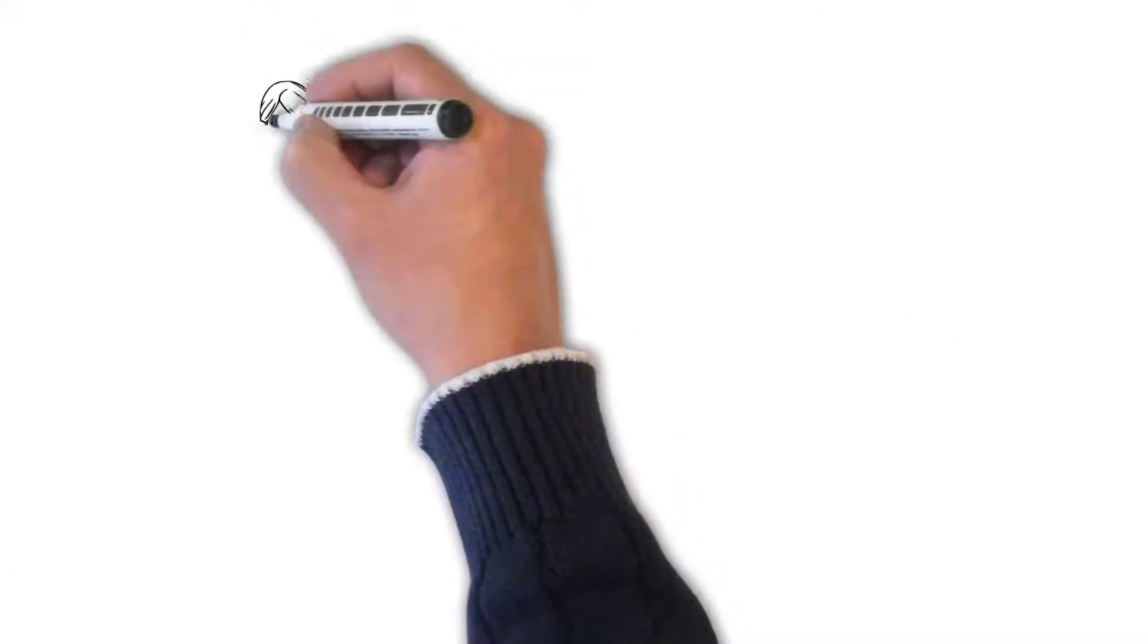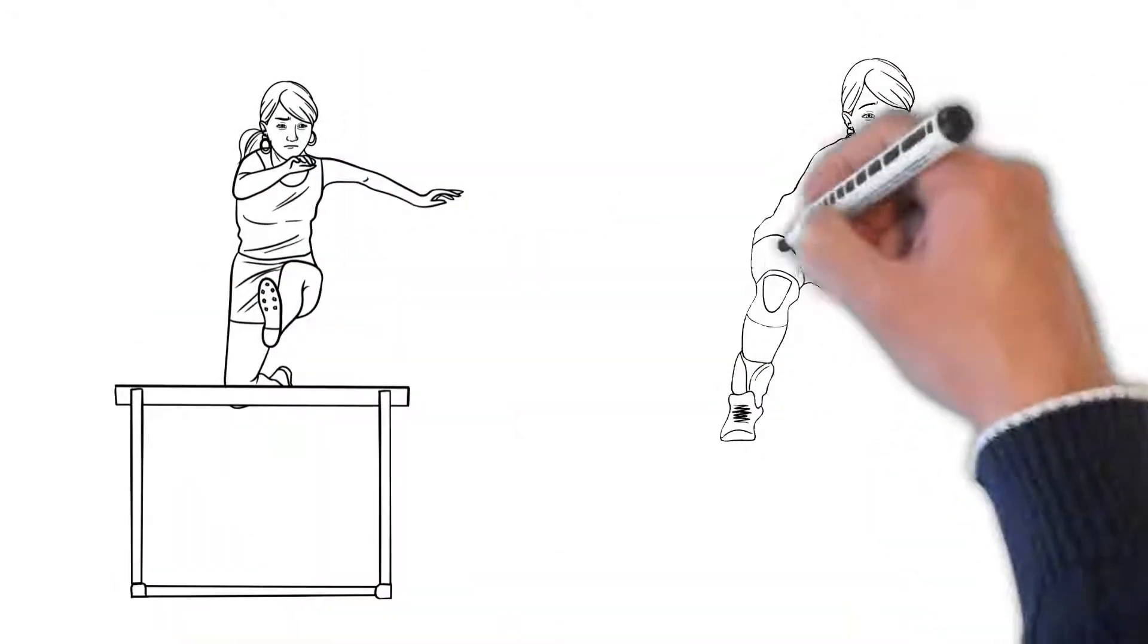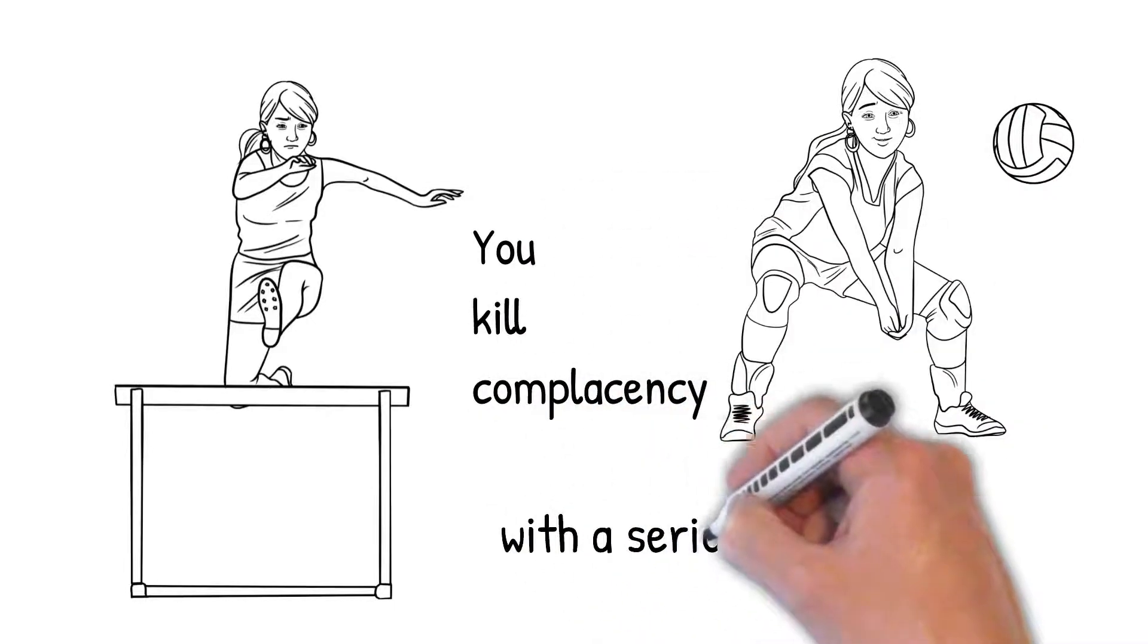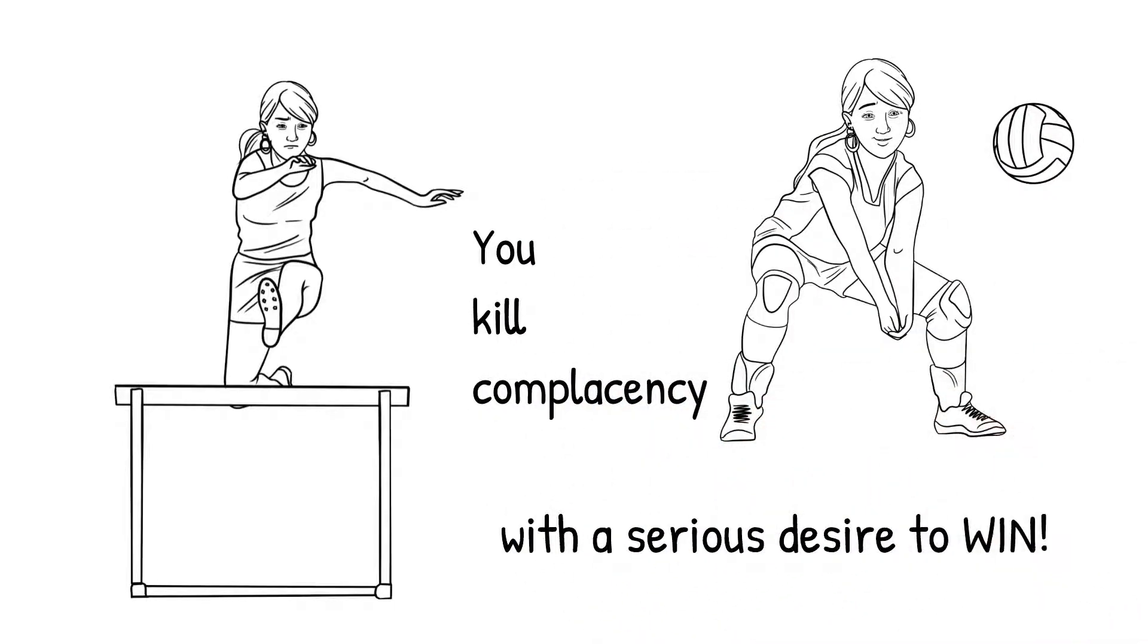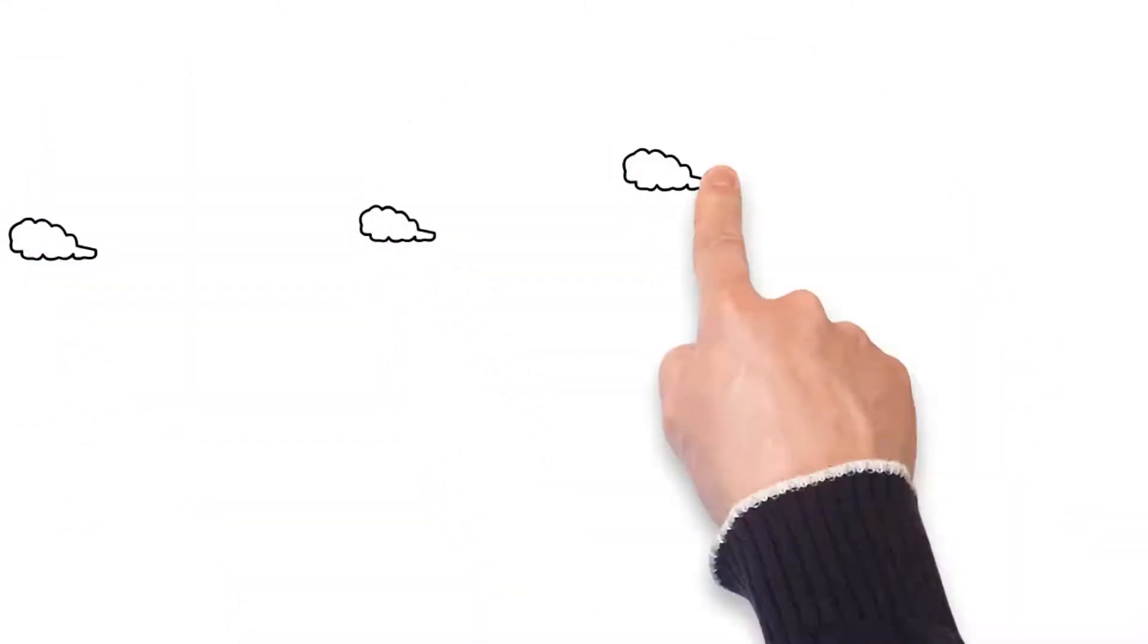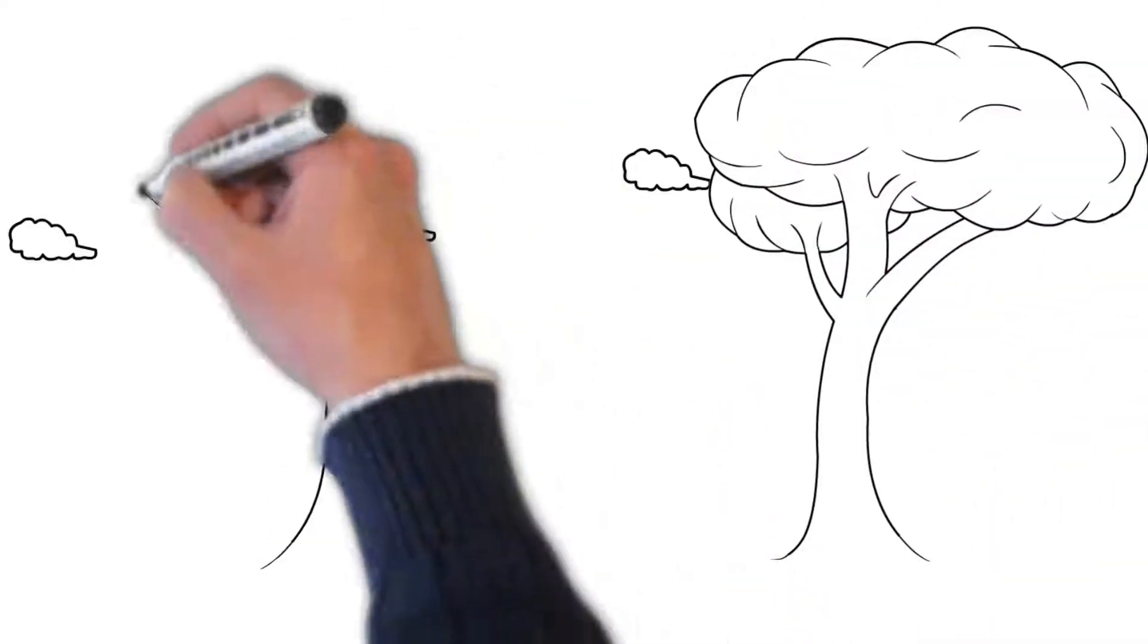You kill complacency by a serious desire to win. And that comes back to clearly communicating the why of your organization, clearly understanding what success looks like for the individual positions within your organization, understanding the tasks which define success, which we've talked about all of these things in the past.